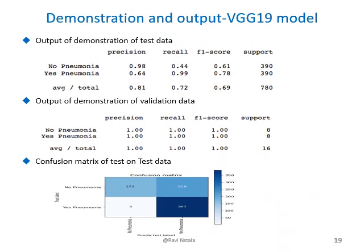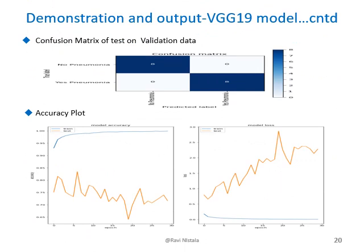This slide shows the output of the VGG19 pre-trained model with an added new top layer. The precision value for the test data is 0.81 and for the validation data is 1. The confusion matrix shows that 780 total cases were evaluated, with true positive cases of 387, true negative cases of 172, false positive cases of 218, and false negative cases of 3. The validation confusion matrix shows true positive cases of 8 and true negative cases of 8, with no false positives or false negatives.